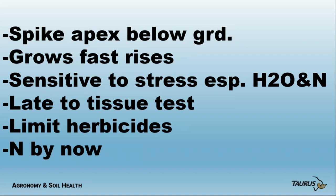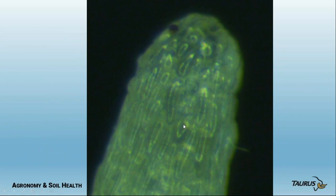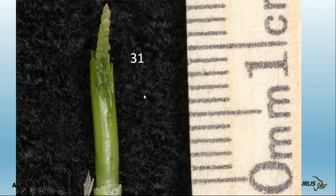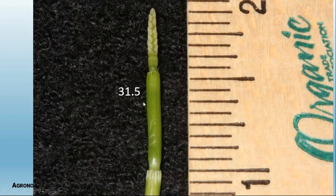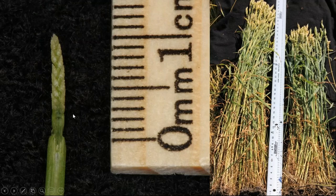At this point you're starting to limit herbicide application because you're beginning to affect the seed head. You should have your nitrogen on by now. This is the growing point of wheat before the head is formed. At stage 31, this is one centimeter above the ground — you can see the size of the seed head. Stage 32, we're two centimeters above ground with all spikelets formed, all the seeds inside the spikelet in their embryonic stage. This is when you put on manipulator to shorten the stems.